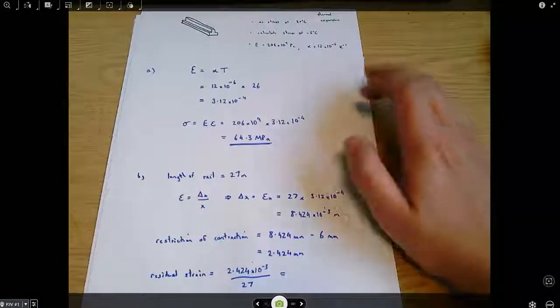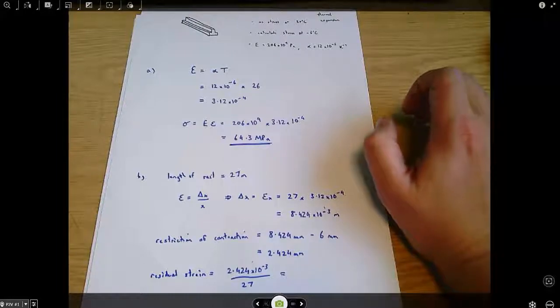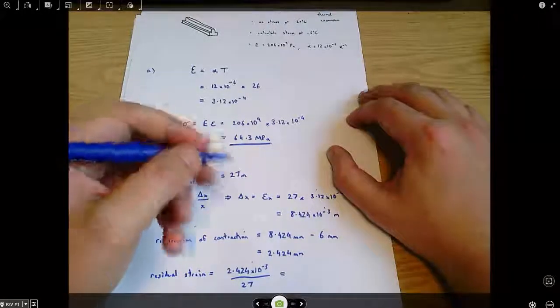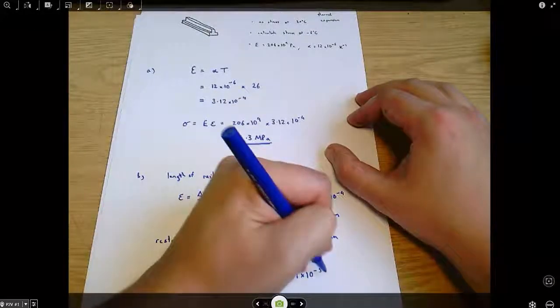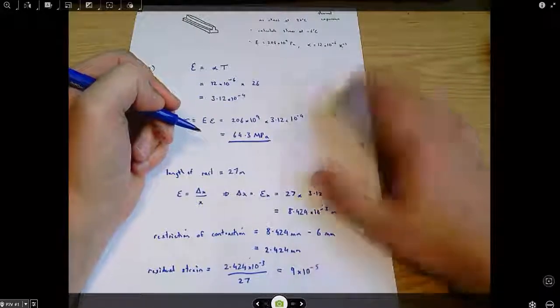And so, we can calculate that. And that comes out to be pretty much exactly 9 times 10 to the minus 5. And that is a strain, so it doesn't have any units.